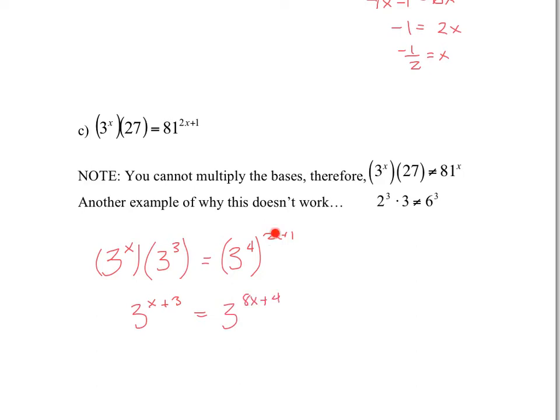And be careful, a lot of people will make the mistake of doing 2x times 4 and 8x and forgetting about the 1. It's 2x plus 1 times 4, so there's a distribution property here. And now we've had the same base on both sides. So we can put in equal signs between our exponents.